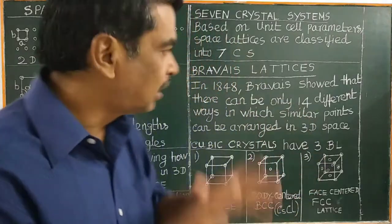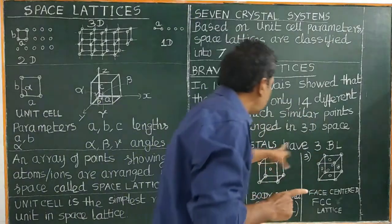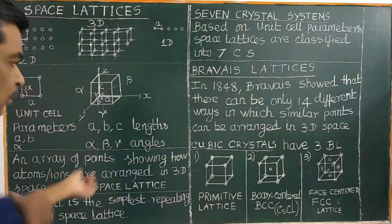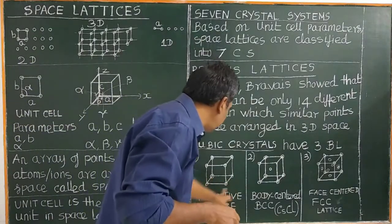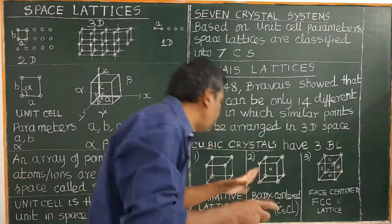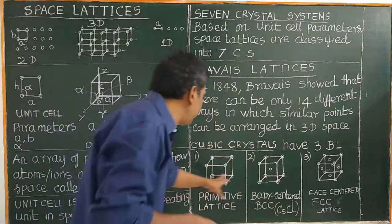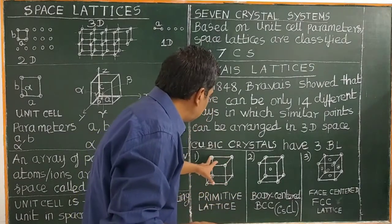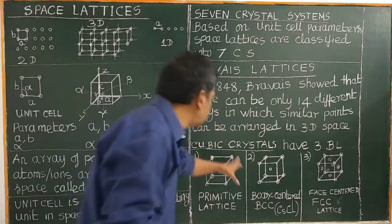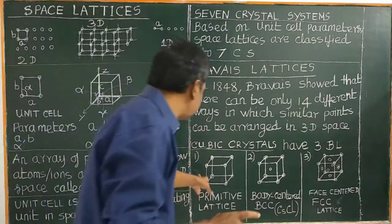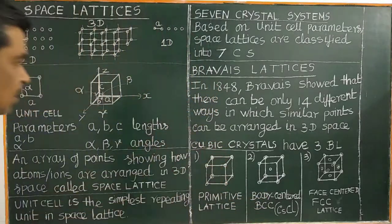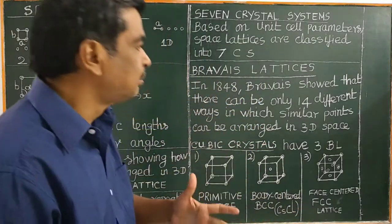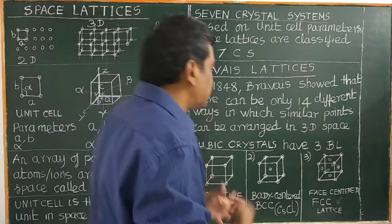In the cubic system, there are three Bravais lattices. The first is the primitive — or simple cubic — lattice. In a primitive lattice, there are atoms only at the corners of the cube. There are many Bravais lattices across systems, including monoclinic and triclinic systems.